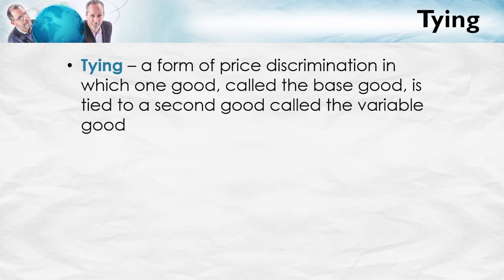Tying is a form of price discrimination where one good, called the base good, is tied to a second good, called the variable good.